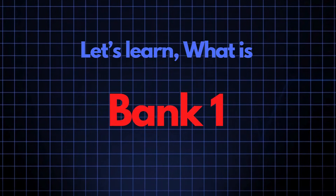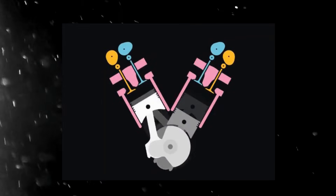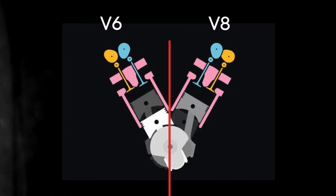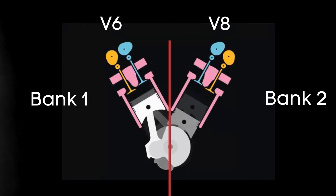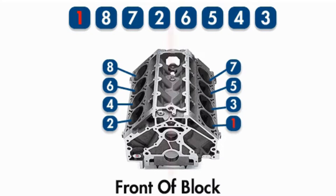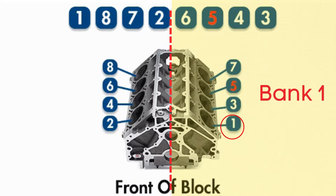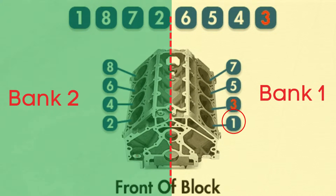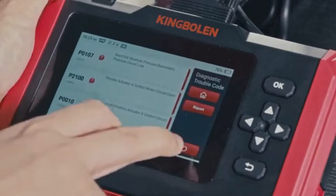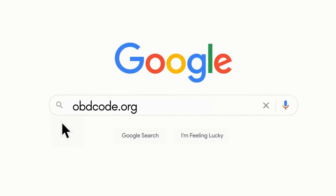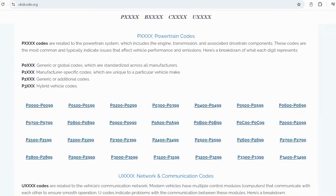Now let's learn what Bank 1 is. In engines with multiple cylinder banks, like V6 or V8 engines, you'll have two sides or banks of cylinders. Bank 1 typically refers to the side of the engine where cylinder 1 is located, and Bank 2 is on the opposite side. If you want to read more about any other OBD2 codes, you can visit our website obdcode.org for a full list of codes and their meanings.